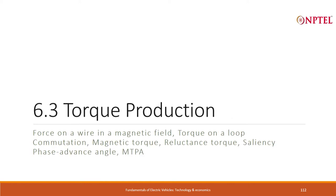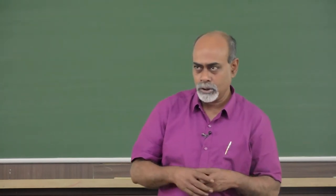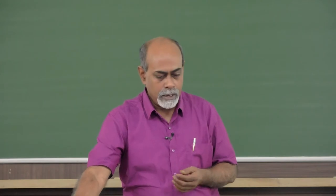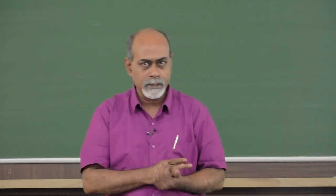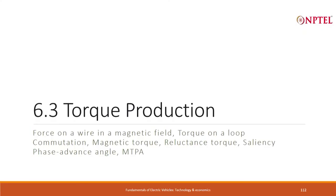Then we went into some depth about torque production. Torque happens because electricity passing through a wire results in a force acting on the wire if the wire is in a magnetic field. We extended this idea by turning the wire into a loop to get torque. We also explored a very interesting phenomenon where merely the presence of steel in a magnetic field can cause what is called reluctance torque. We chose the IPMSM architecture because it gives significant magnetic torque and also a good deal of reluctance torque. When optimizing between magnetic and reluctance torque, we are optimizing the phase advance angle — that algorithm is called MTPA, maximum torque per ampere.